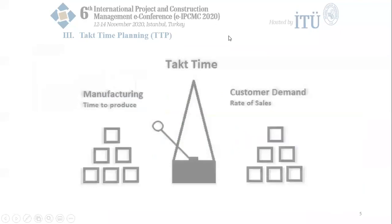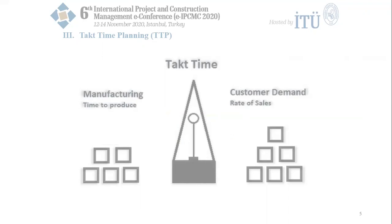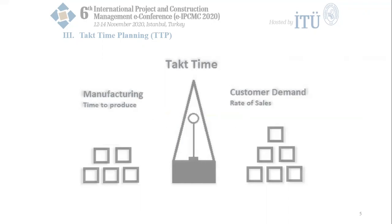Lean philosophy aims to eliminate the seven types of waste: overproduction, inventory, repair/rejects, motion, transport, processing, and waiting. In the construction industry, lean also embraces the principles of value, value stream, flow, pull, and perfection. Takt time planning is increasingly used for residential construction projects, highway projects, and hospital projects in different countries.